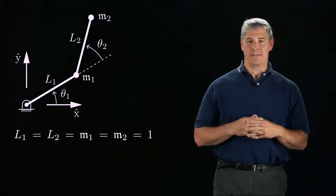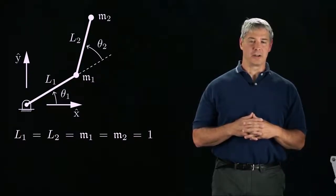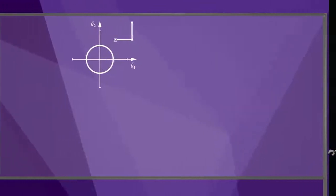To see the variation in the mass matrix graphically, consider again the 2R robot arm, where the link lengths and masses are each one. Assume that the robot initially has zero velocity, and consider a circle of accelerations in the joint space at this robot configuration.